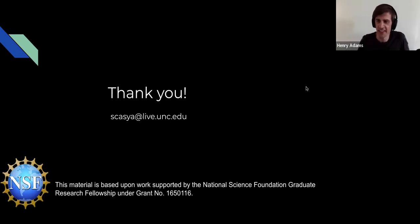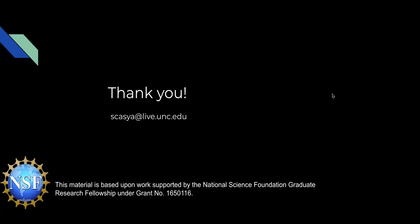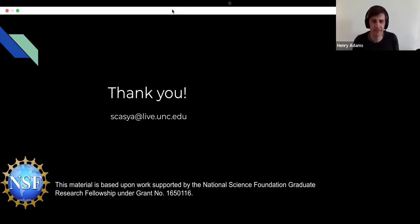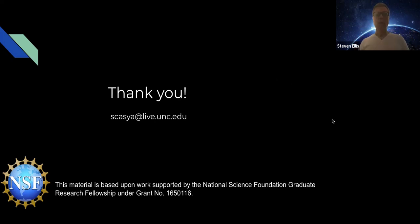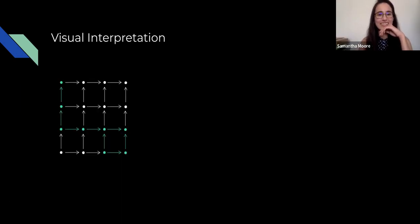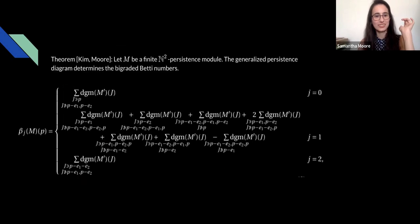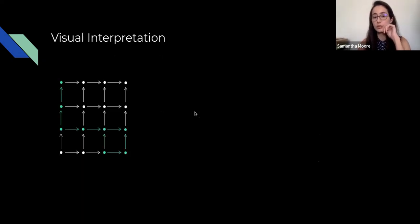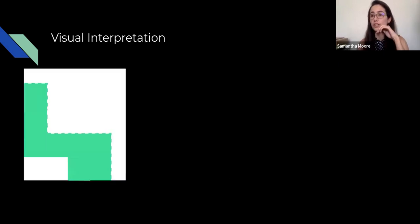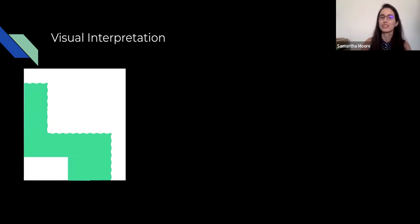In the Q&A, a question arose about whether the results extend to non-interval decomposable modules. Yes — the main theorem holds for all finite N^2 persistence modules, and the visual interpretation also holds generally, not just for interval decomposable modules. The key difference is that the first visual interpretation (reading Betti numbers directly from intervals) is only for interval decomposable modules, while the second uses diagram values for any finite N^2 module.